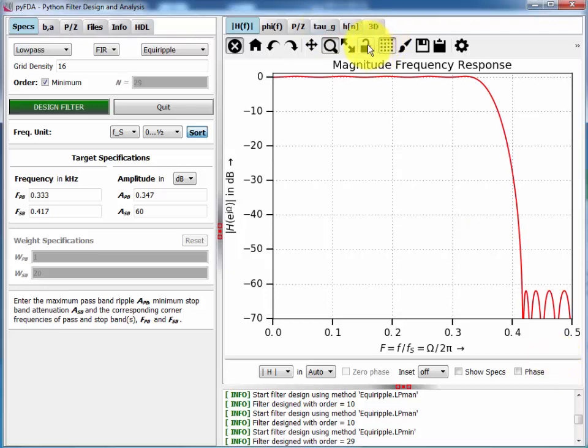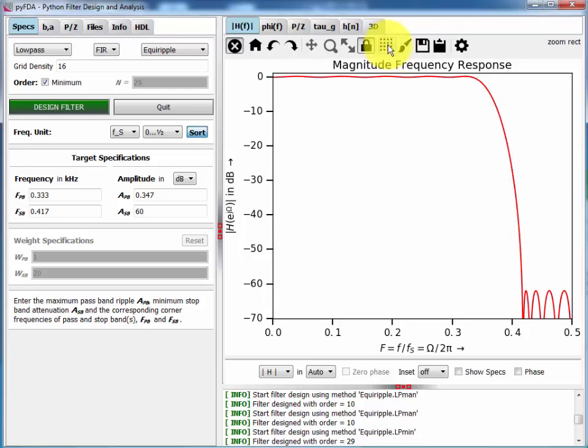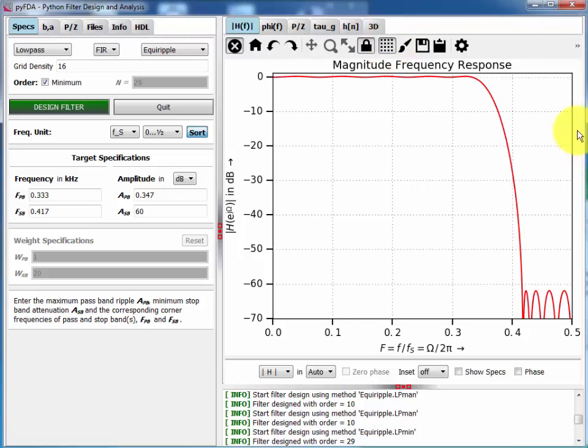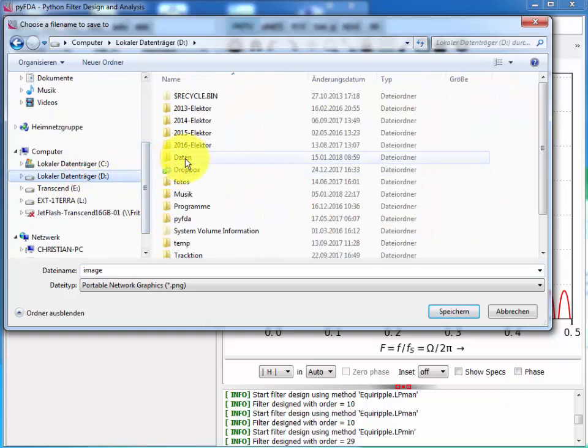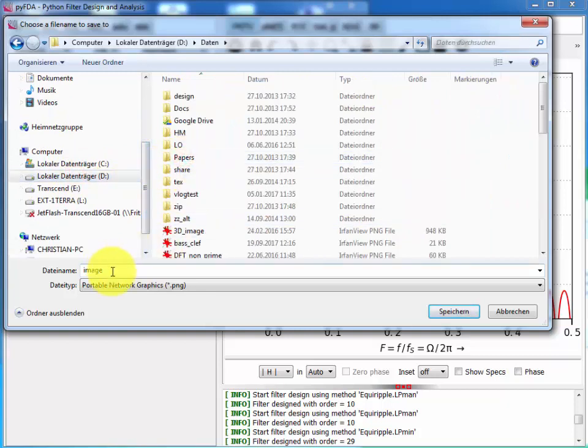And here you also see sometimes you have to hit the redraw button to get a nice looking plot again. This button locks the zoom so you can design different filters and then compare directly how they perform. This toggles your grid, so with this icon you can save the screen in various graphical formats. I'll stick with the PNG format and just call it image.